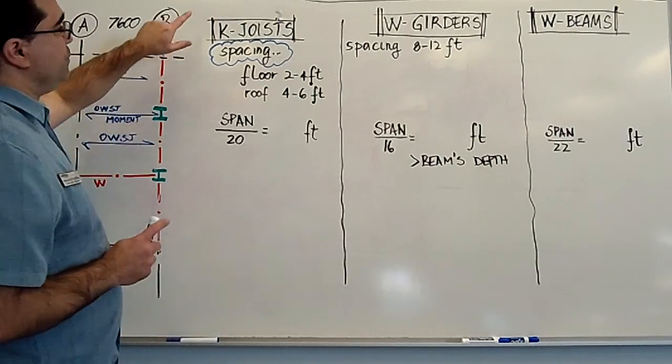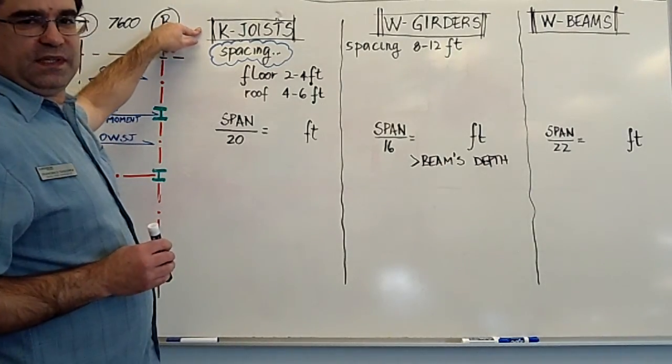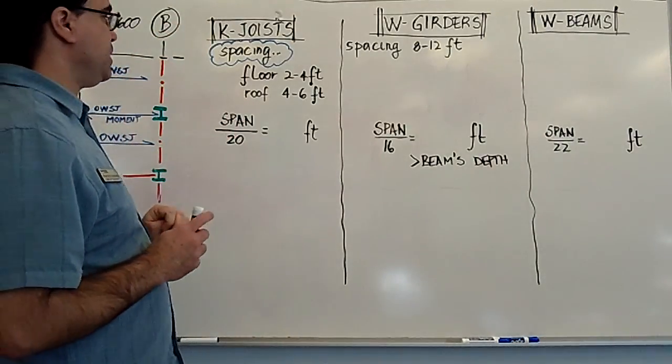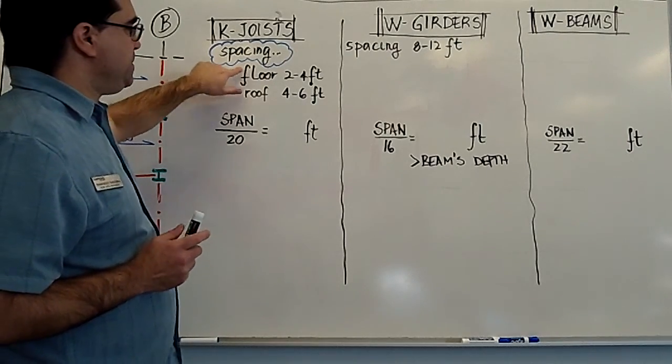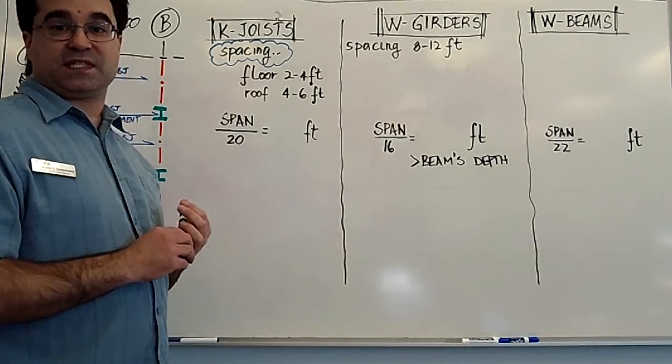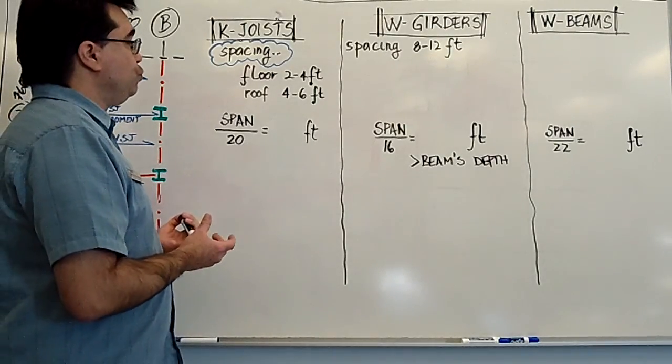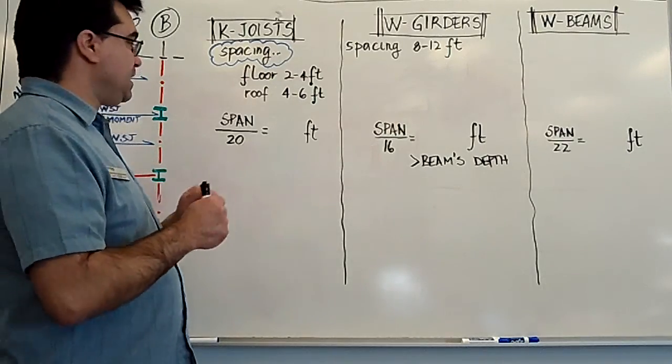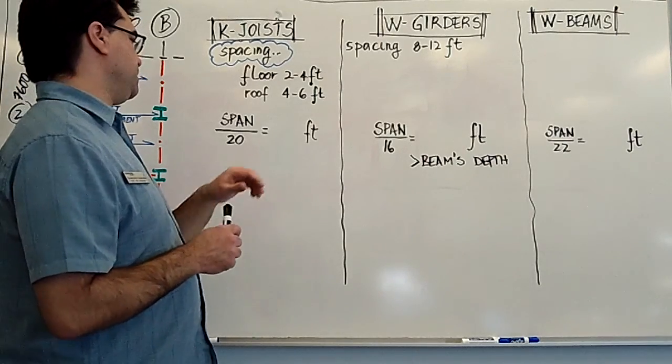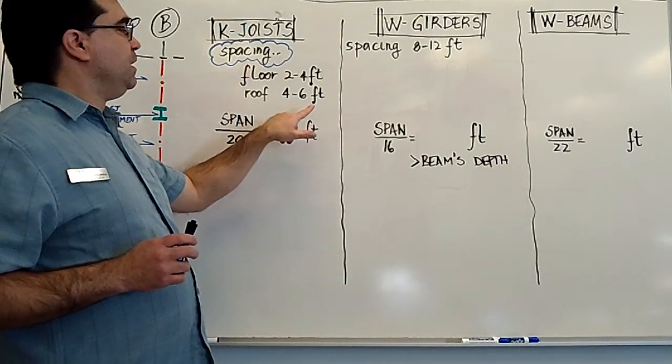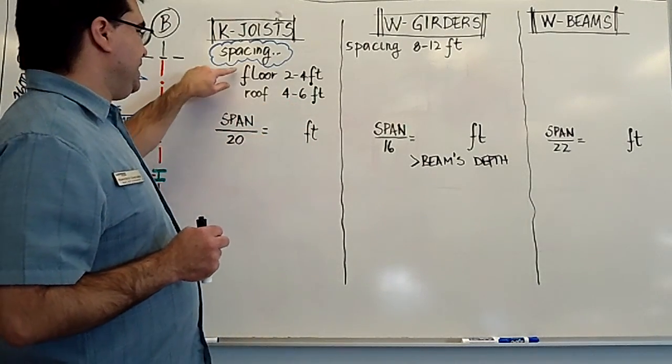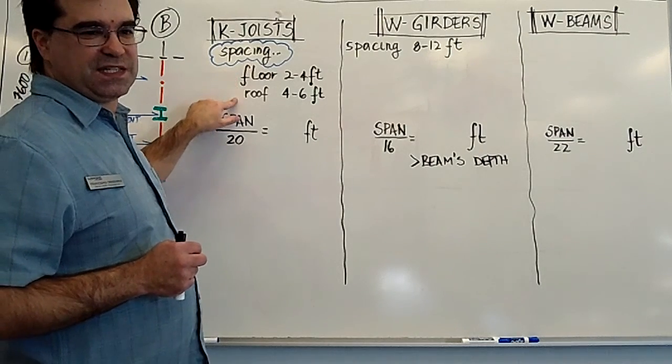Alright, for K-joists. K-joists typically are going to be set up for the purposes of this example, and as it shows in your textbook, where floor joists are typically spaced at two to four feet, that is in metric units approximately 600 millimeters to 1.2 meters in spacing, or if they're on the roof, four to six feet in spacing. So that's approximately 1,200 millimeters by 1.8 meter or 1,800 millimeters. Now this, let's call American spacing.